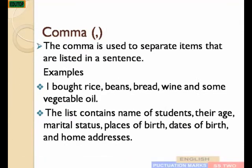Comma. The comma is used to separate items that are listed in a sentence. Examples: I got rice, beans, bread, wine and some vegetable oil. The items in the sentence have been separated by commas. Another example: The list contains names of students, their age, marital status, places of birth, dates of birth, and home addresses.